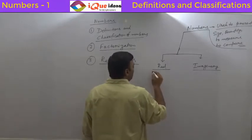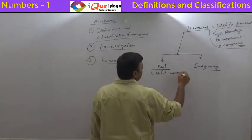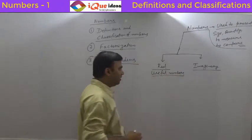So basically, real numbers are all useful numbers. Things which look like numbers and they are really useful.